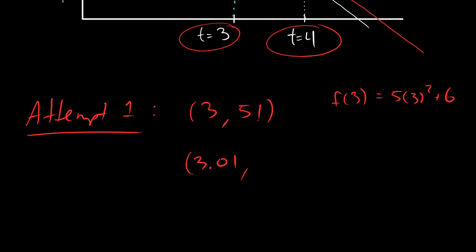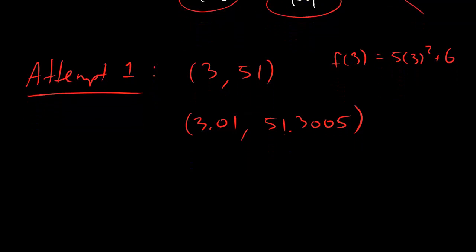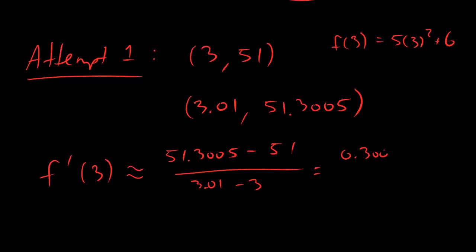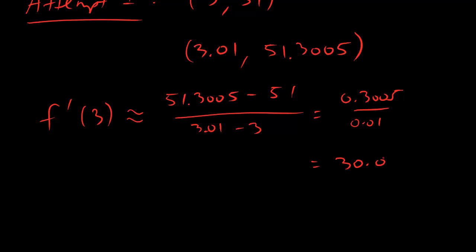And now if you plug the second dude, 3.01, into your function, you get 51.3005. So now we've got actually two points, we can find the slope that connects them, and the idea is that the derivative is the slope of the tangent line, which is approximately equal to the slope between these two points. It's not exactly equal to it, but it's close. And that slope is 51.3005 minus 51, that's y2 minus y1, divided by x2 minus x1. We're going to get 0.3005 over 0.01, and that ends up being equal to 30.05.